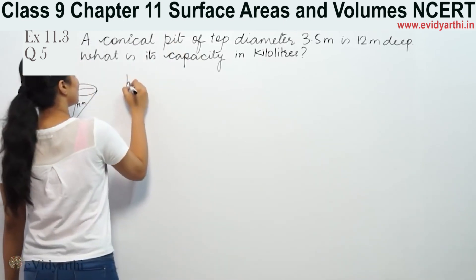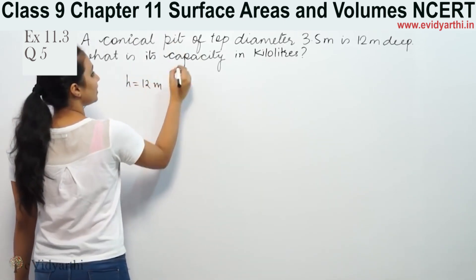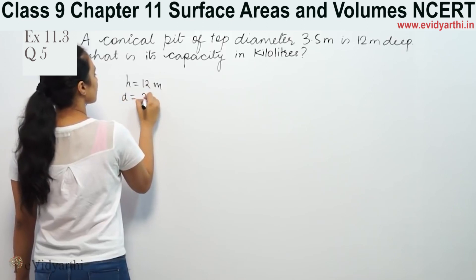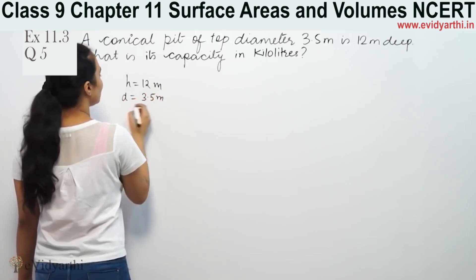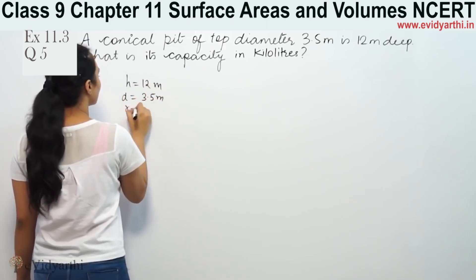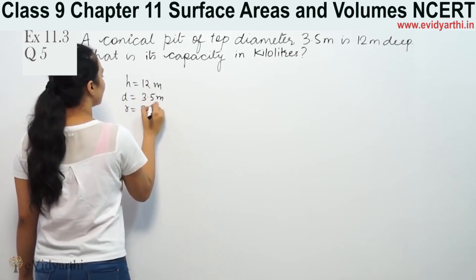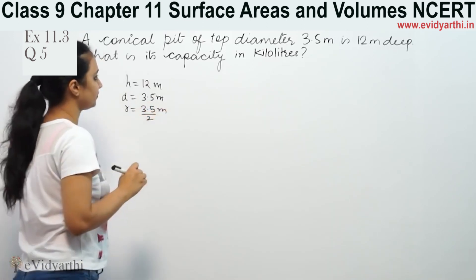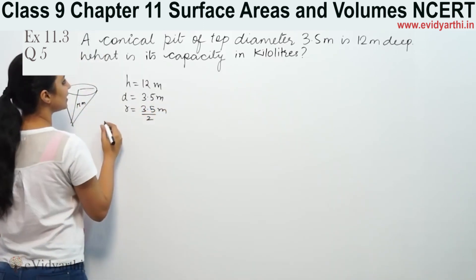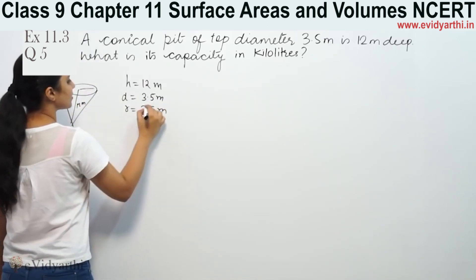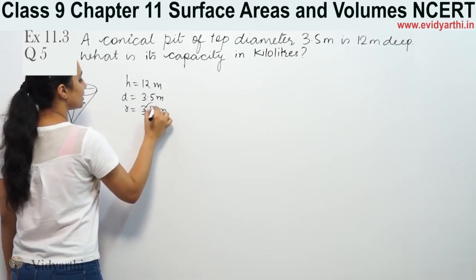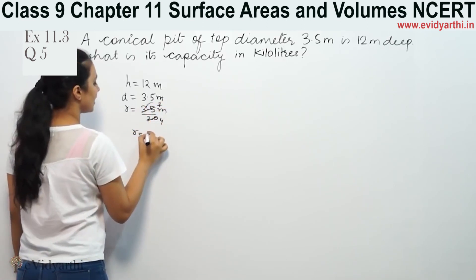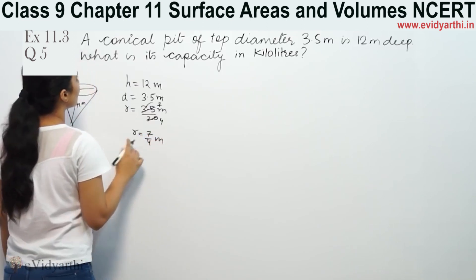So the height is 12 meters, and the diameter is 3.5 meters, so the radius will be 3.5 by 2. This gives us radius equal to 7 by 4 meters.